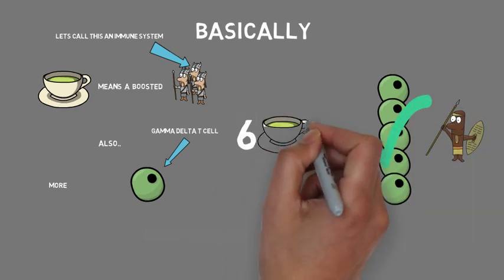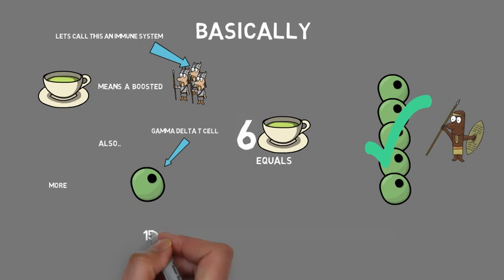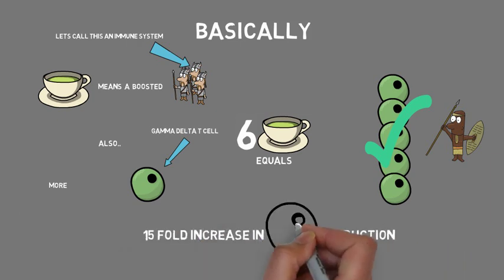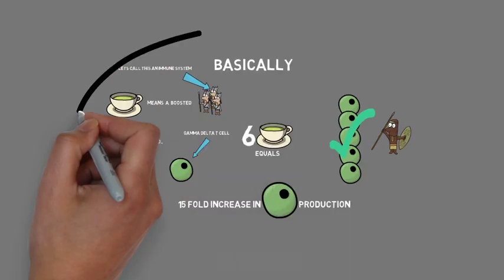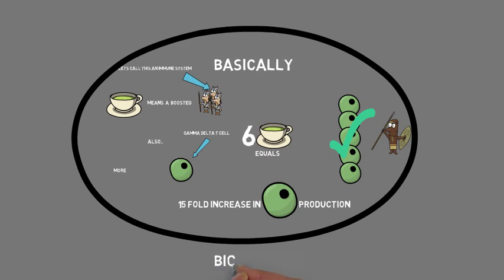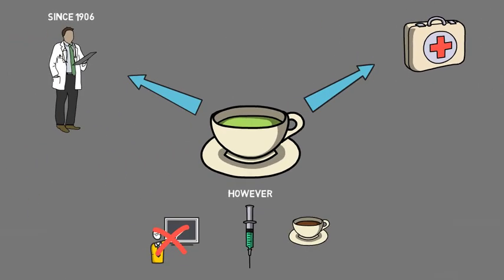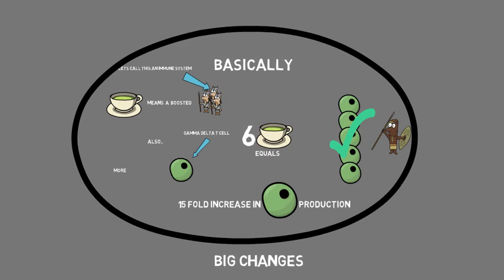It was even found that people who drank six cups of tea a day had a 15-fold increase in immune cell production in just a week. So the difference that tea makes in immune function is very large. This is why the studies we went over earlier found that green tea is so good for fighting viruses and infections. It causes such a large increase in immune function, so you're able to fight off infections way better than before.